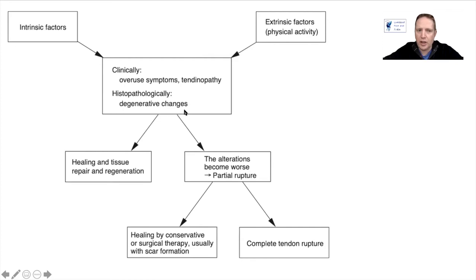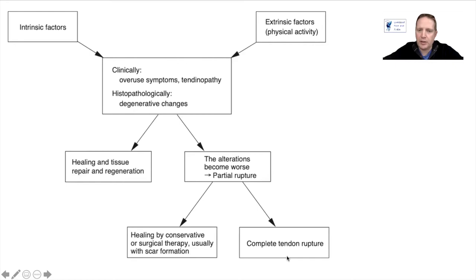These degenerative changes either heal, or if they continually go through abnormal forces, you have partial rupture, which can then complete to a complete tendon rupture.